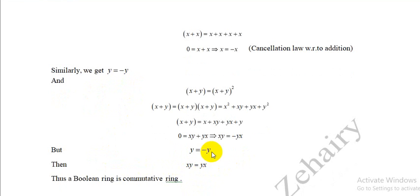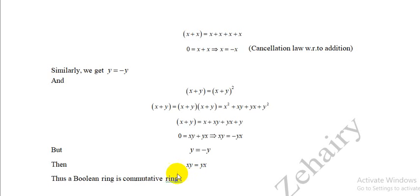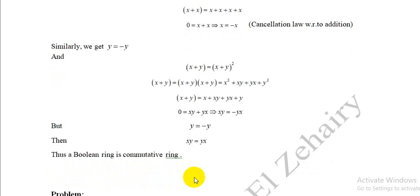From this result, we have proved that xy = yx for all x, y ∈ R. Therefore a boolean ring is a commutative ring.